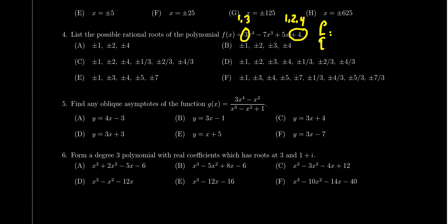We have to consider positive and negative cases. So we're going to get plus or minus one, plus or minus two, plus or minus four. Those are all the divisors of four if we divide by one. Then we have to take all these same divisors and divide them by three. So we get plus or minus one third, plus or minus two thirds, and plus or minus four thirds.